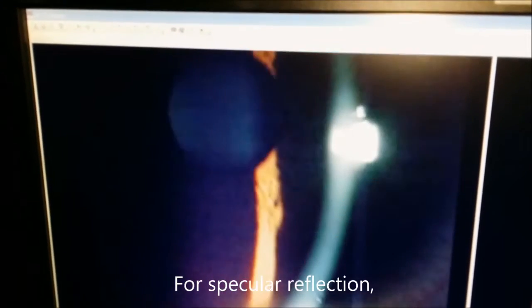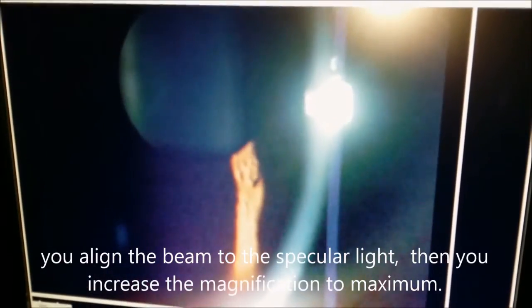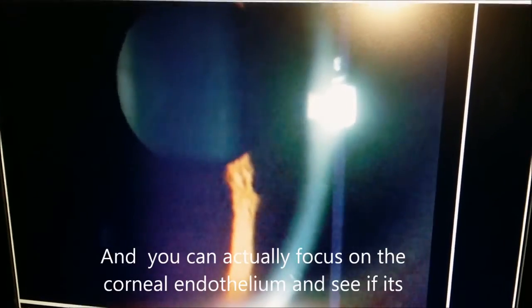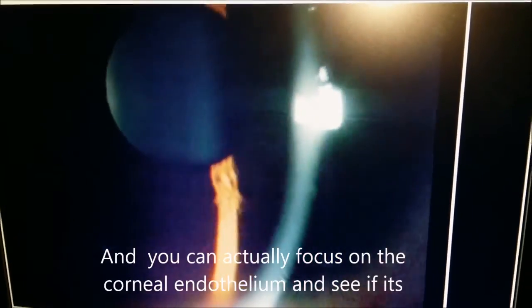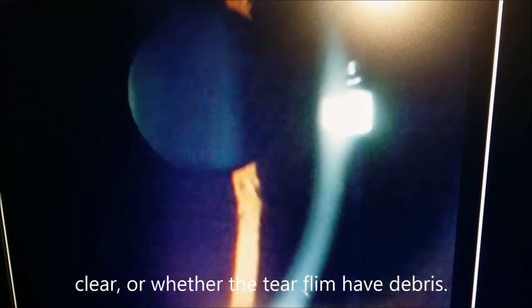For specular reflection, you align the beam to the specular light, then increase the magnification to maximum, and you can focus on the cornea endothelium to see if it's clear or whether the tear film has debris.